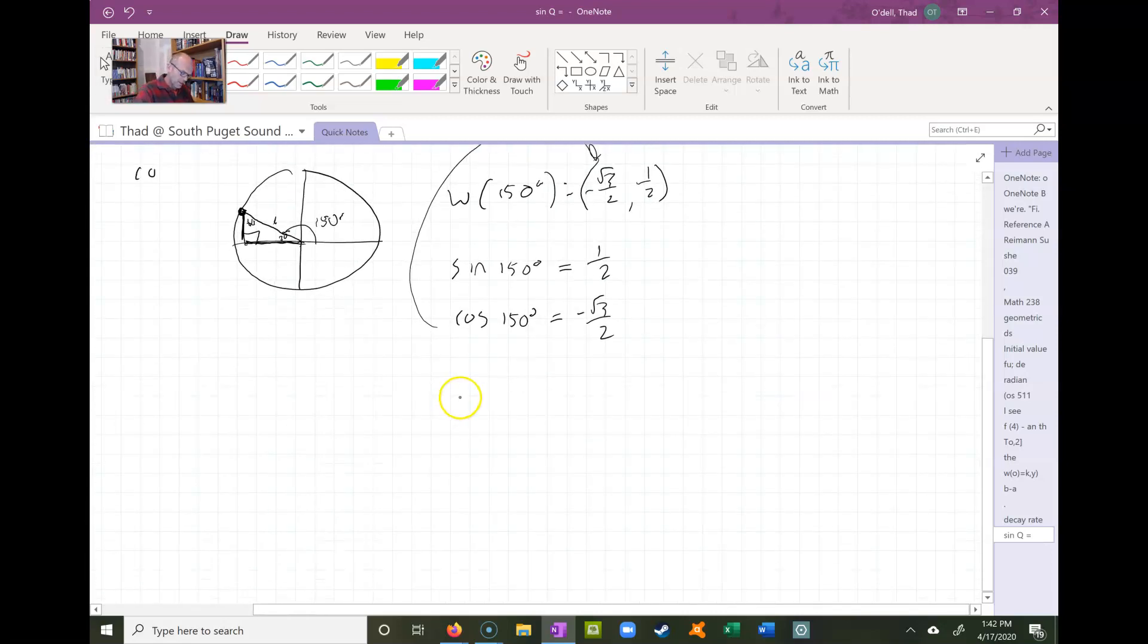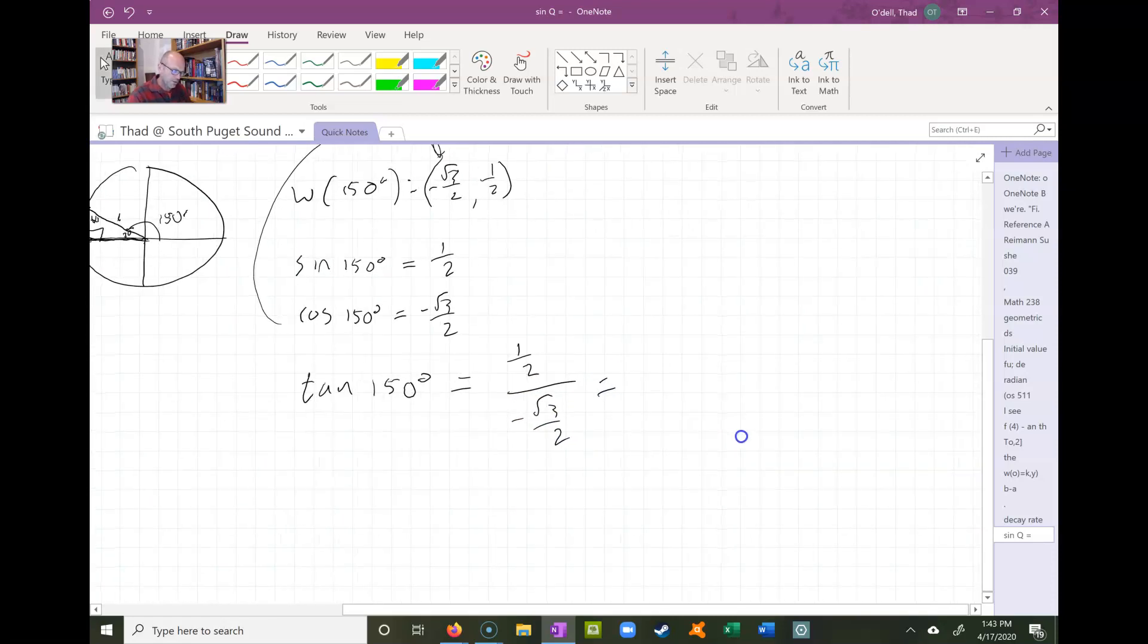So if we add to this little mix down here, what is the tangent of 150 degrees? Well, we know that's just sine over cosine, so that means it's one half over negative √3 over 2. And of course, if we flip that over and multiply, we get negative one over √3.